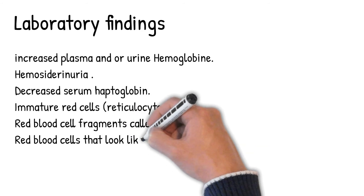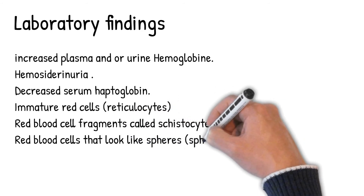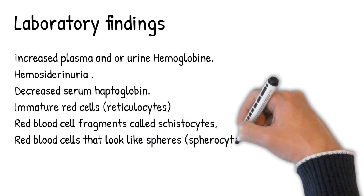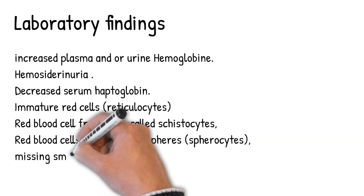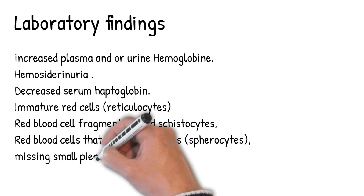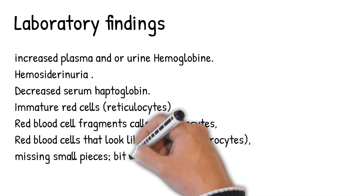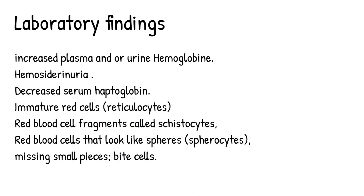Additional diagnostic findings include red blood cell fragments called schistocytes, red blood cells that look like spheres called spherocytes, and red blood cells missing small pieces called bite cells.